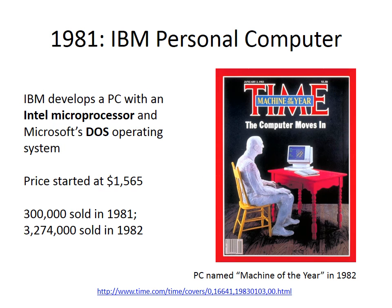The IBM personal computer sported an Intel microprocessor and a new operating system called DOS that a young Bill Gates licensed to IBM. The relatively inexpensive PC sold 300,000 units in 1981 and over 3 million units the following year. The PC was named Machine of the Year by Time Magazine, and it made the young Bill Gates and his small company Microsoft very, very wealthy.